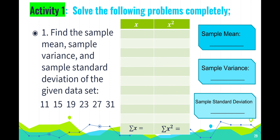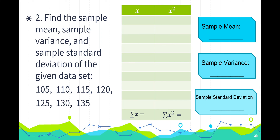For your activity one, solve the following problems completely. First, find the sample mean and sample variance by completing the table — write down the values of x from lowest to highest, then square each sample, show your solution, and write down the sample mean, sample variance, and sample standard deviation. Problem number two is the same: complete the table and find the sample mean, sample variance, and sample standard deviation.